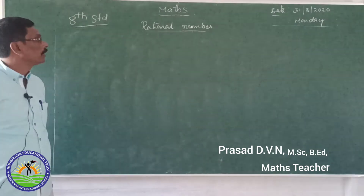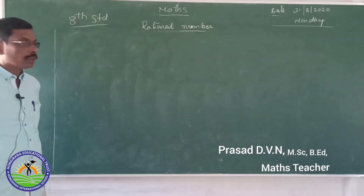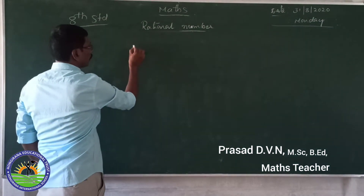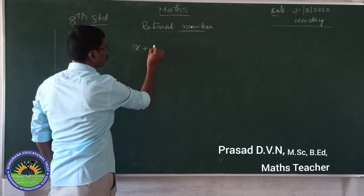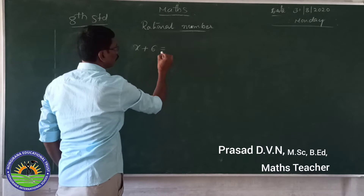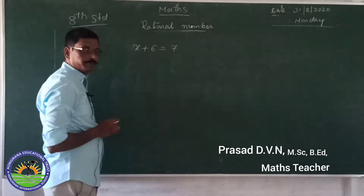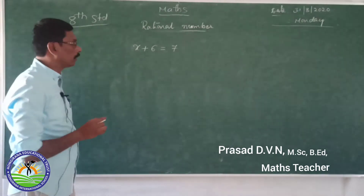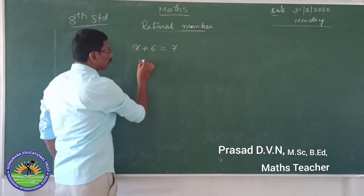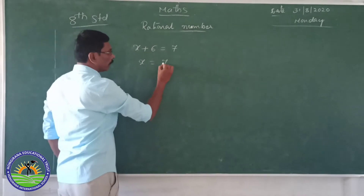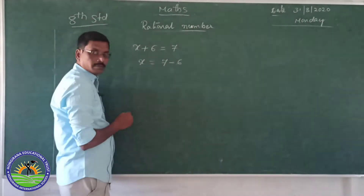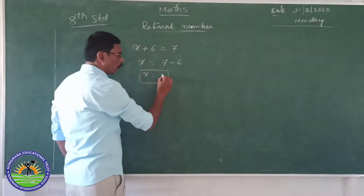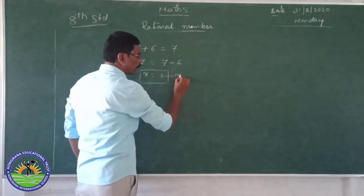Let us start the lesson on rational numbers. We know that the equation x plus 6 is equal to 7. This is a linear equation with one variable. Solving it: x is equal to 7 minus 6, we get x is equal to 1. Here, 1 is a natural number.